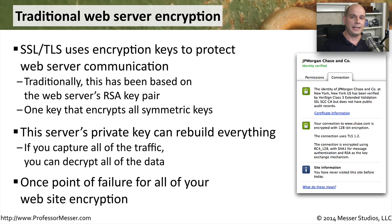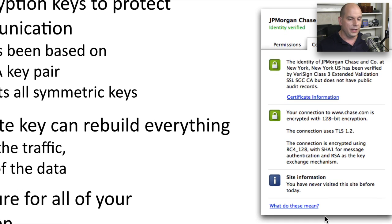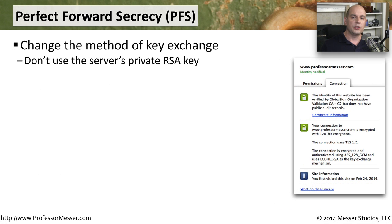If you wanted to see what type of key pair was being used for this key exchange, you can look at the details. This is from my browser from JPMorgan Chase. You can see that the connection to that web server is encrypted with 128-bit encryption. It's using RC4-128 with SHA-1 for message authentication and RSA as the key exchange mechanism. That tells us that RSA is what we're using for that public-private key pair on that particular web server.